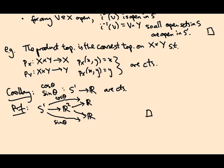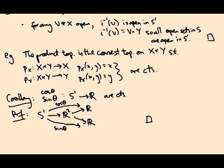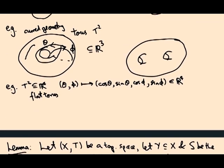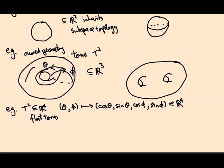Looking back at the formula for the flat torus in R4, we can see that the torus is being thought of as a product S1 × S1. The map to R4 — sending (θ, φ) to (cos θ, sin θ, cos φ, sin φ) — is a continuous map because it's just a collection of continuous maps bundled together.